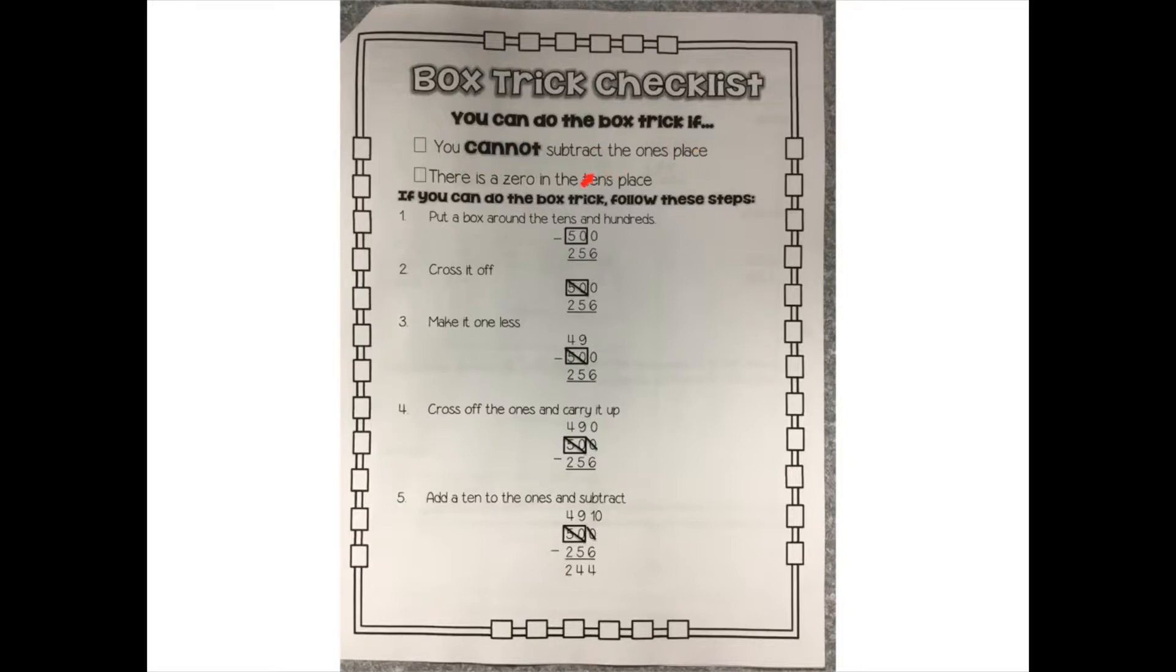The next thing is if there's a zero in the tens place. So in this problem, when I go next door to get ten more, there is a zero, so there's nothing to take from next door. So then, I'm going to follow these steps to do the box trick.